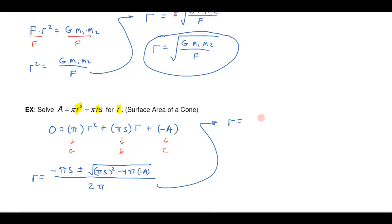So my r value is going to be a negative pi s plus or minus the square root of pi squared s squared and then the two minuses here will make a plus 4 pi A all over 2 pi.